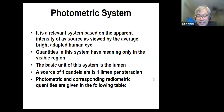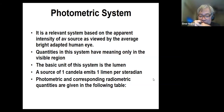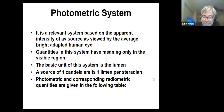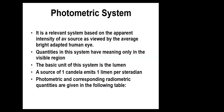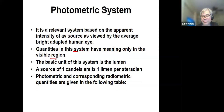This is what we could call weighted human vision. We can have photometric measurement according to the spectral sensitivity of the human eye, with more weight given to wavelengths in the visible region. If you're going to look at this photometric system, the quantities in this system have meaning only in the visible region.